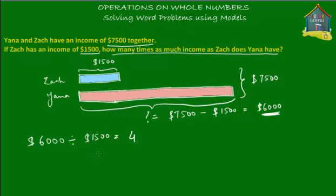The answer is four. What you have to do is divide $6,000 by $1,500, and that gives you four. This means it will take four blue boxes to make one pink box, and hence, in terms of the incomes our two people are making, Yana's income is four times as much as Zach's income.